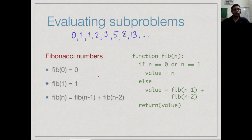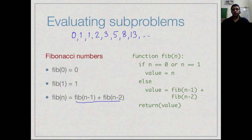How does the recursive function go? Fibonacci of n: if n is 0 or 1, the value is n itself. Otherwise, you compute the value recursively as Fibonacci of n minus 1 plus Fibonacci of n minus 2, and then return whatever value you have computed. So where is the catch?